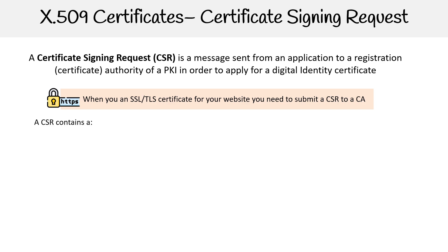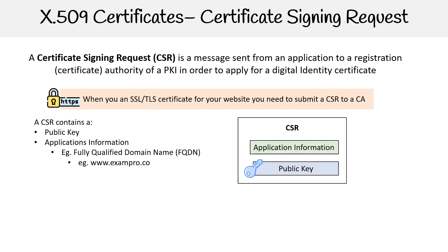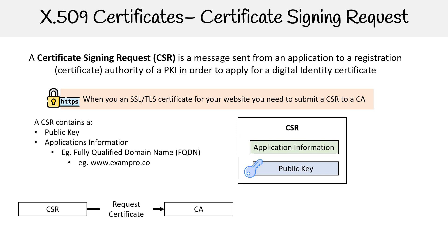A CSR contains a public key and application information such as a fully qualified domain name, because if you're getting a CSR for a domain name, they're going to need to know the domain name. Those two things get packaged together. You create your certificate signing request, you submit it to the certificate authority, and the certificate authority will issue you a certificate if it deems that it approves your request.